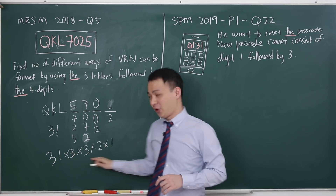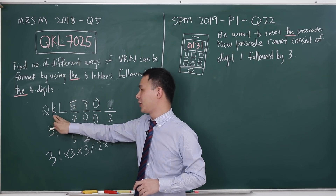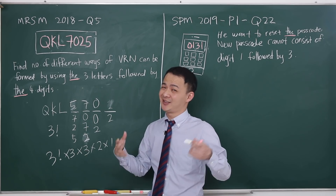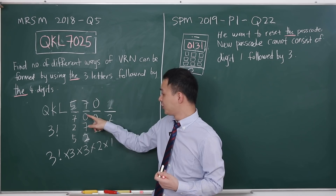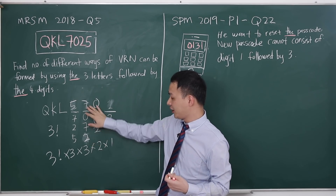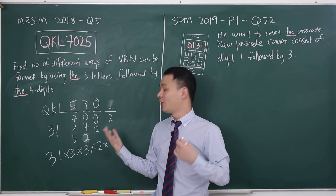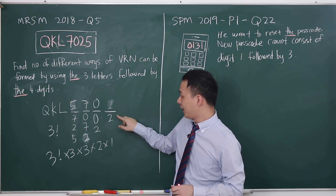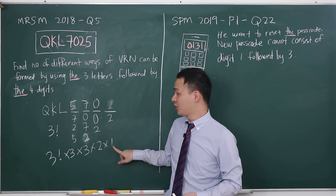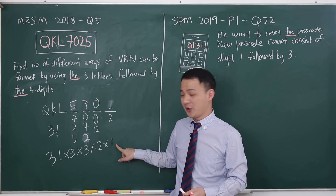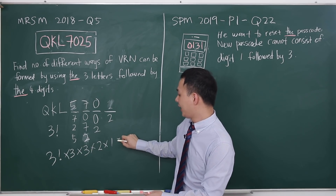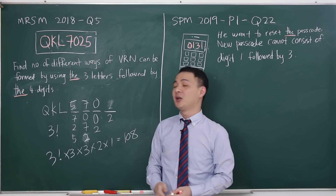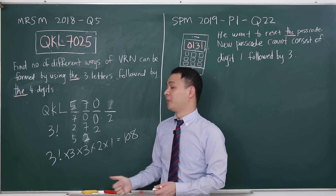So I have 3 factorial for arranging QKL, then 3 ways, 2 ways, and 1 way for the digits. Multiplying all of them gives 108, which matches the marking scheme answer.